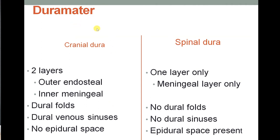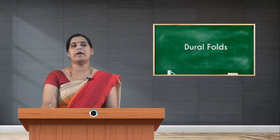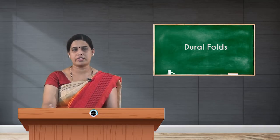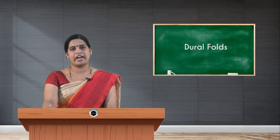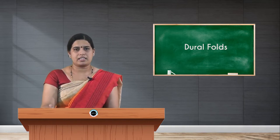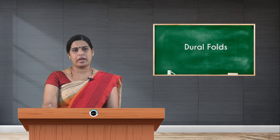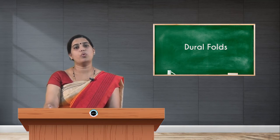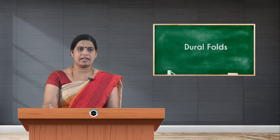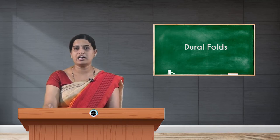Regarding the differences between cranial and spinal dura mater: in the cranial dura mater you will see two layers — the outer endosteal layer and the inner meningeal layer. That inner meningeal layer is thrown into folds, and in between these folds you will find the venous sinuses, called dural venous sinuses. In the spinal dura mater there is only a meningeal layer, with no dural folds and no dural venous sinuses.